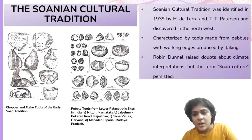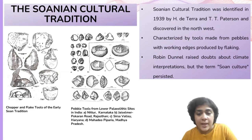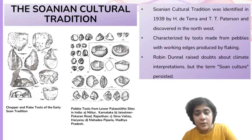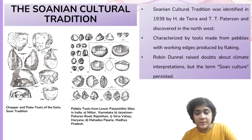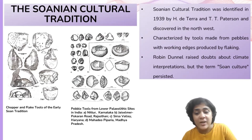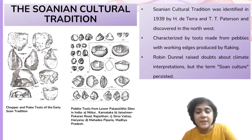The identification of the Sohanian cultural tradition dates back to 1939, when H.T. Tera from Yale University and T.T. Patterson from Cambridge University conducted field studies in the northwestern region of the Indian subcontinent. During their research, they observed a series of five terraces along the Sohan Valley, part of the larger Indus system, associating these terraces with glacial and interglacial events in the Kashmir Valley. Based on stratigraphical and typological evidence, they proposed what is now known as the Sohan culture sequence.